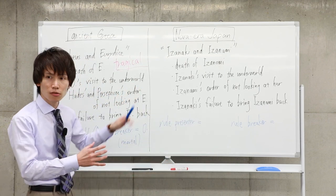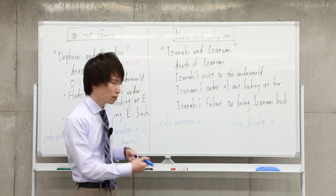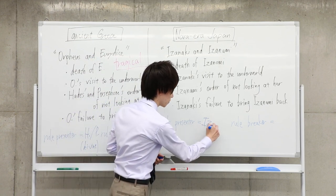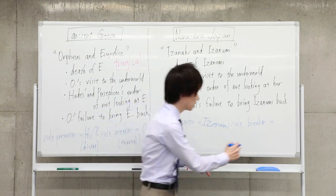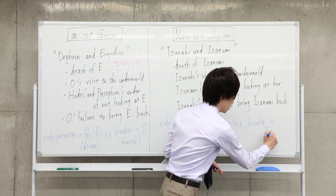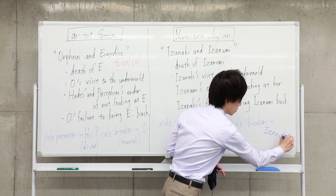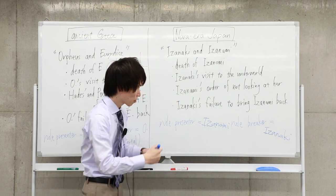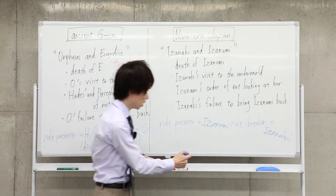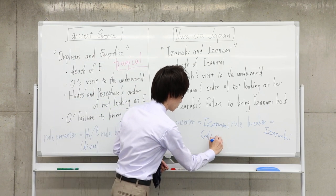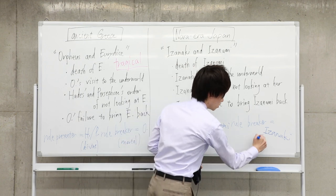In this story, the rule presenter is Izanami, the female protagonist, and the rule breaker is Izanaki, the male protagonist. And importantly, they are both gods, both divine.